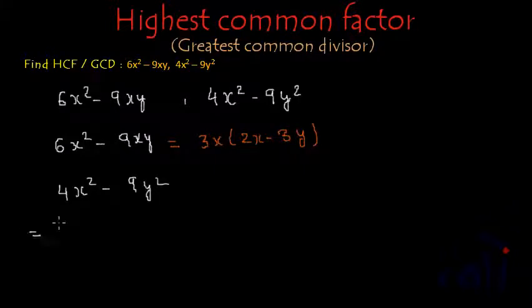This 4x square minus 9y square can be written as 2x whole square minus 3y whole square, right?